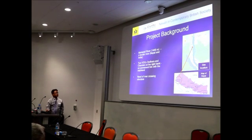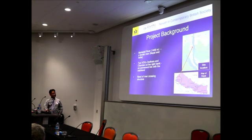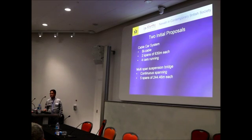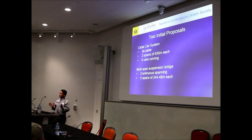This is the project background. You can see where I am talking about — the Mahakali River is just to the west of Nepal, our border river. Two VDCs — village development committees — are on the right bank of Nepal, so you need a permanent crossing for that. The government decided to make a crossing structure, maybe a bridge. I was working in the Department of Roads as an engineer, and the consultant proposed two systems: a cable car system and a multi-spine suspension bridge. The cable car system is bi-cable, one way and another, with two spans of 630 metres each, and four cars loading. The multi-spine suspension bridge has continuous spanning across five spans.